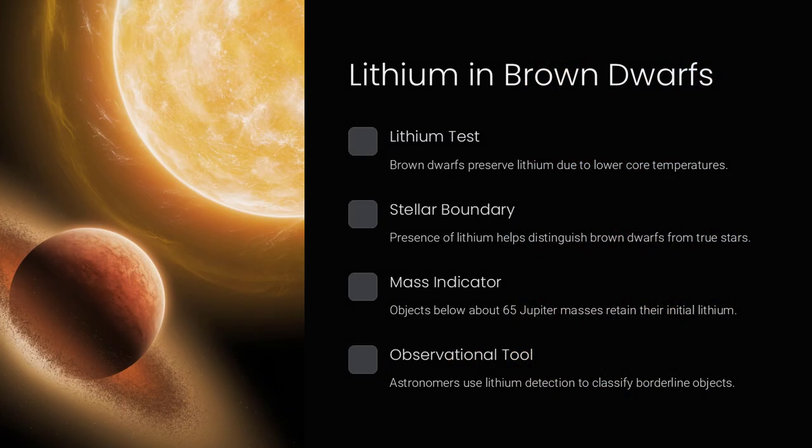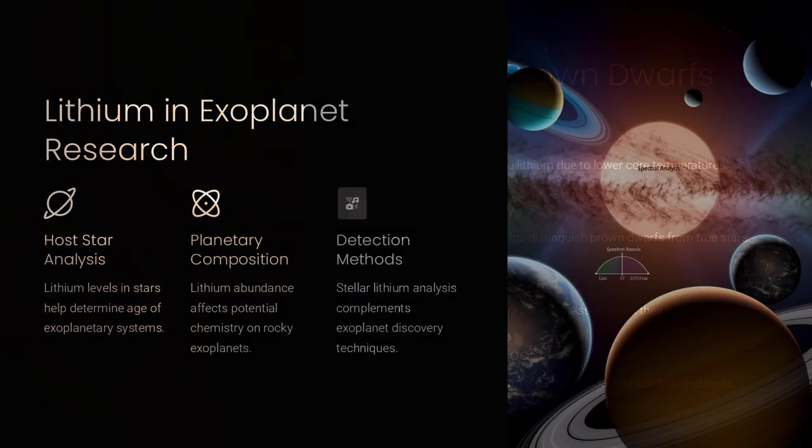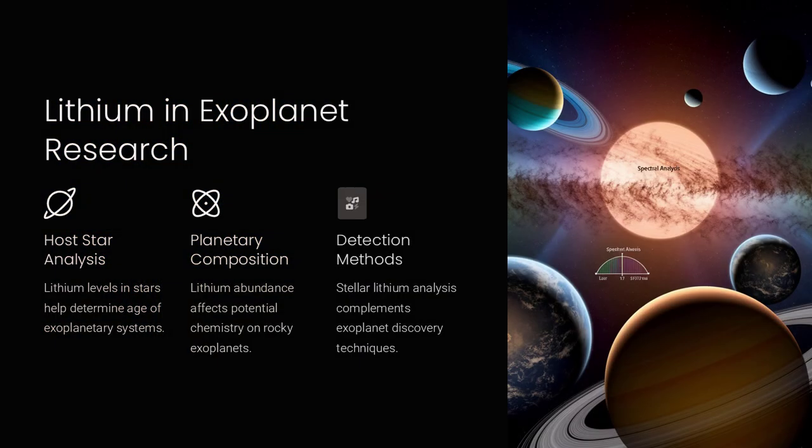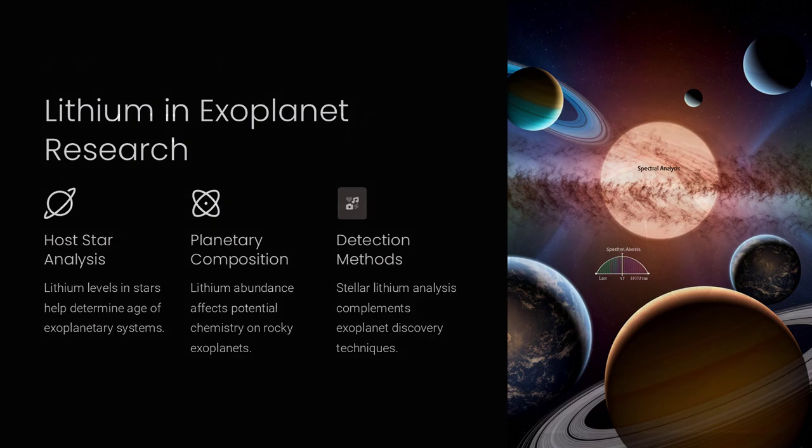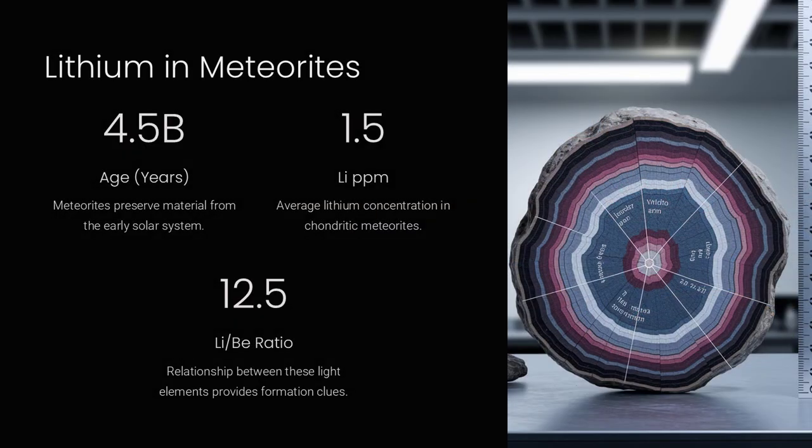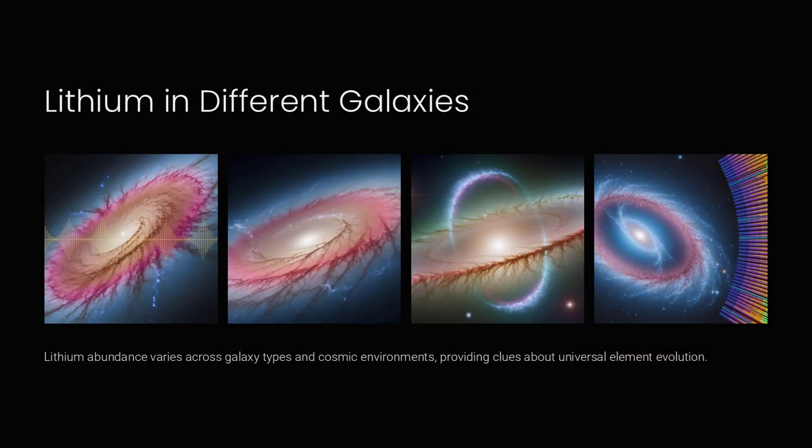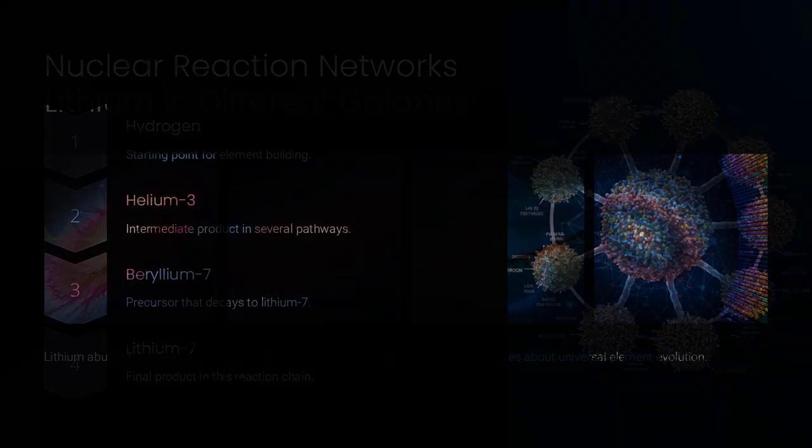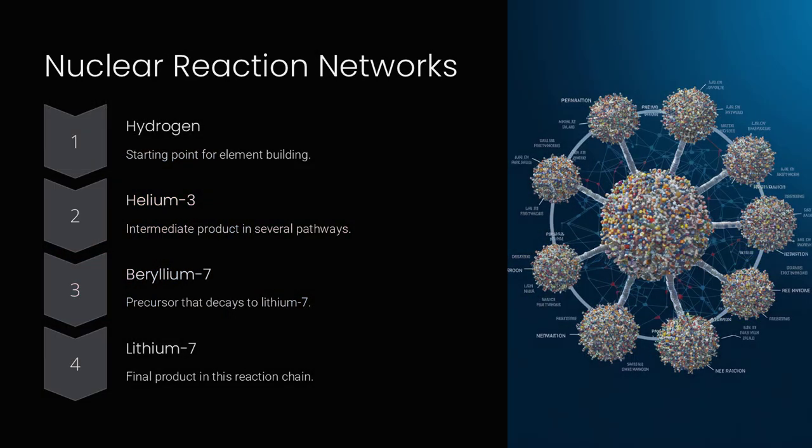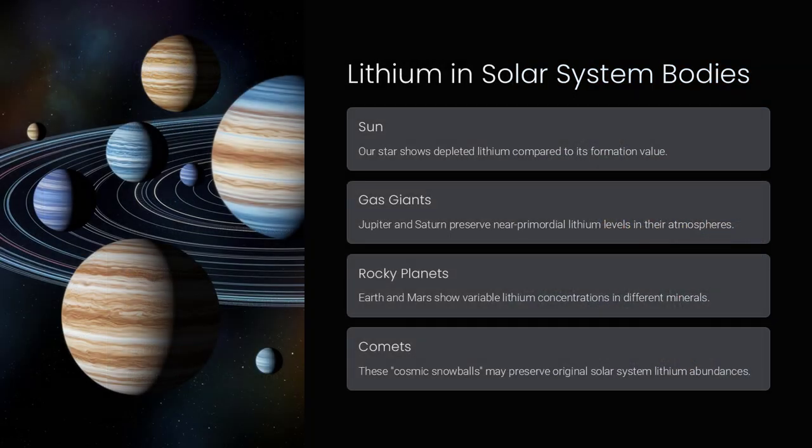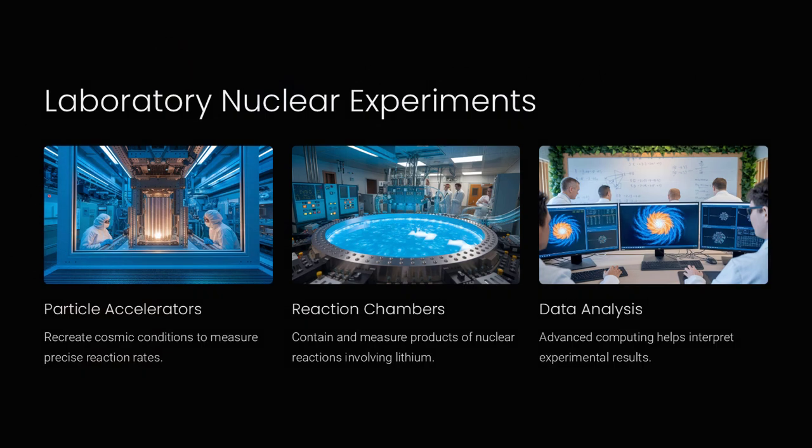Researchers continue to explore this issue by refining observational techniques, conducting laboratory experiments to simulate stellar conditions, and improving theoretical models. In summary, the missing lithium problem highlights a gap between the predicted and observed amounts of lithium in the universe. By questioning whether our nuclear reaction models are complete, or if astrophysical processes might be hiding or destroying lithium, scientists are working to resolve this discrepancy.